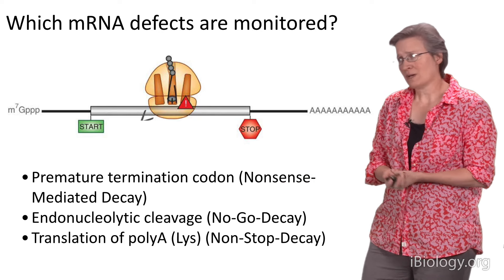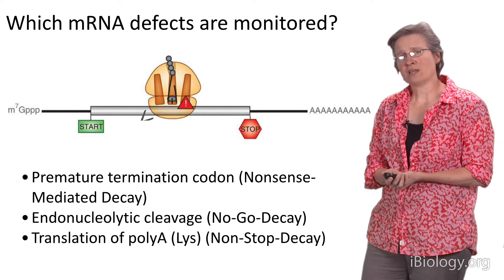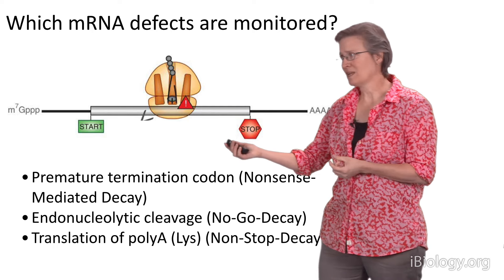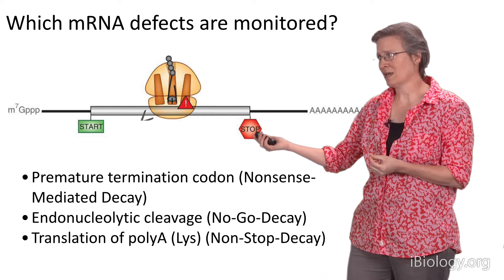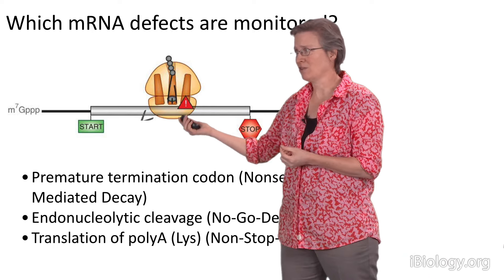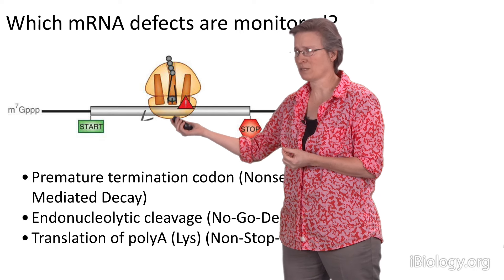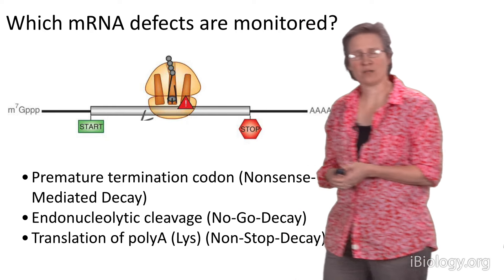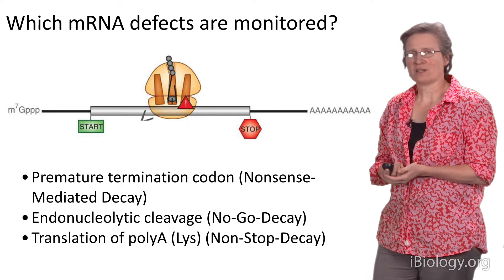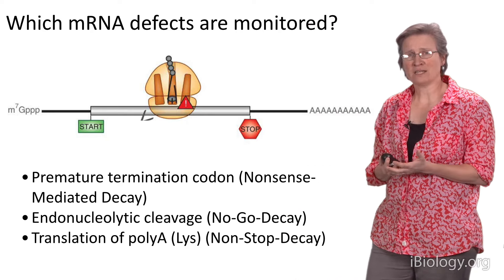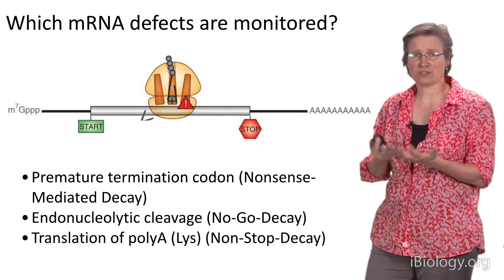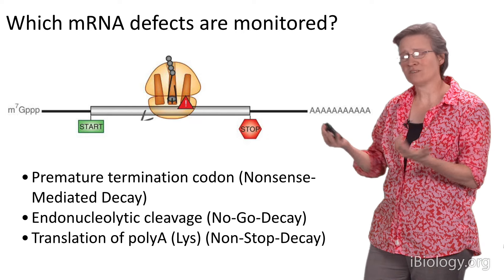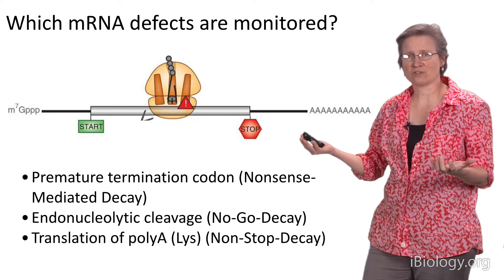One example is if a messenger RNA contains a premature termination codon — instead of having a stop codon only at the end of the open reading frame, by mutation or mis-splicing, a termination codon comes up early in the open reading frame. Eukaryotic cells have a mechanism to determine if a termination codon is the right or wrong one, and they trigger a sequence of events that ultimately leads to messenger RNA decay.